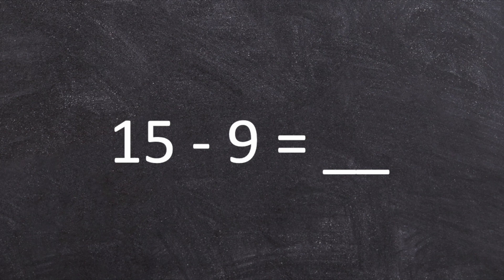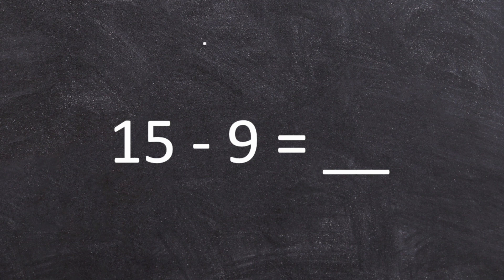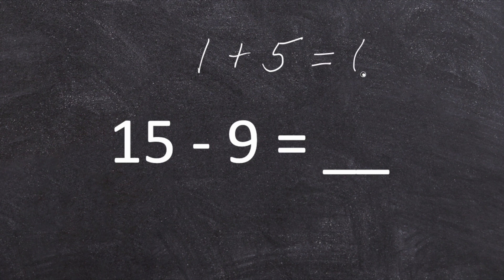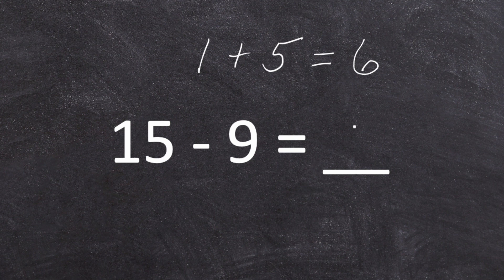Fifteen minus nine equals blank. So fifteen has the numbers or the digits one and five. Add one and five together. One plus five gives us six. There's the answer to our subtraction number sentence. Fifteen minus nine equals six.